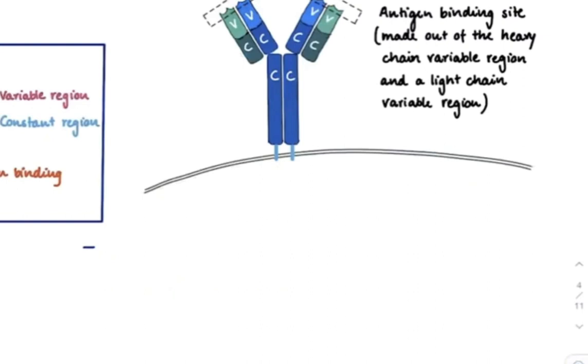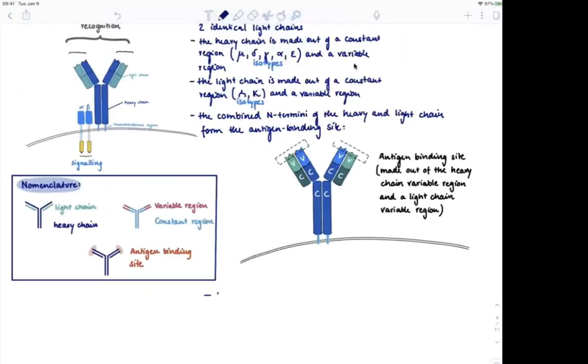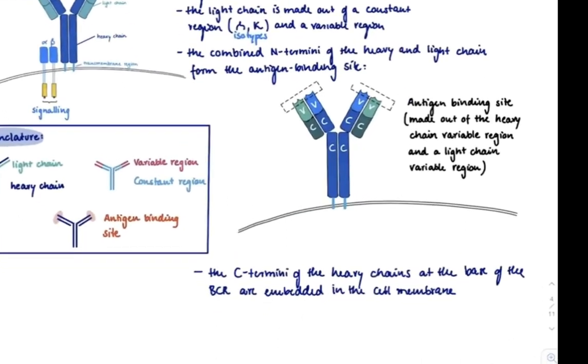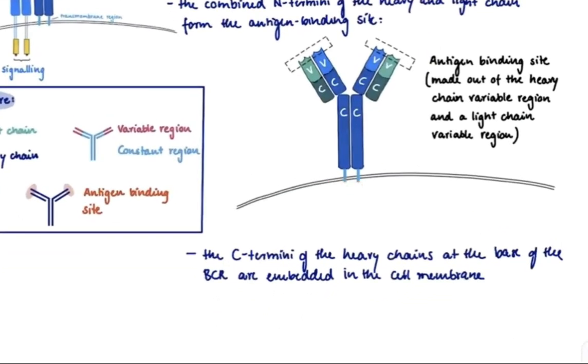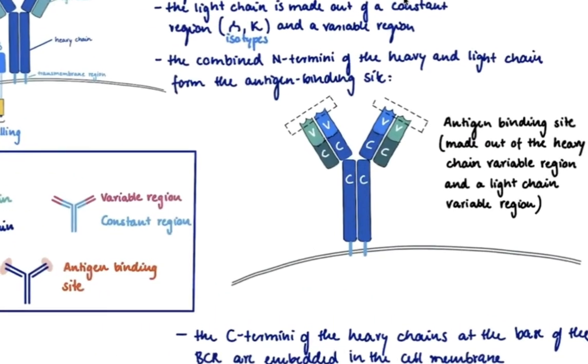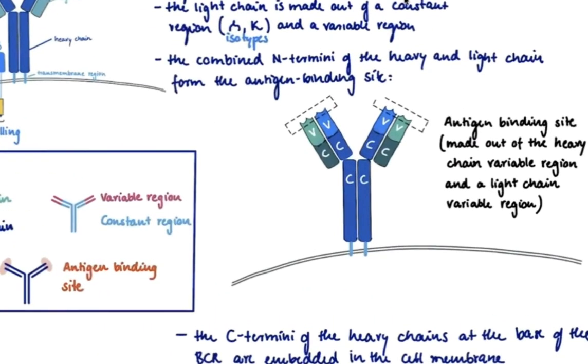And in the case of this BCR, the C-termini are stuck into the membrane. So let's write this down. The C-termini of the heavy chains at the base of the BCR are embedded in the cell membrane. Now what you can clearly see is that the feet of these antibodies are very short. So you can guess that signaling cannot happen with the feet of the antibody. They're just too short, because we eventually need to reach the nucleus with signaling cascades, and we're just not going to get down there.